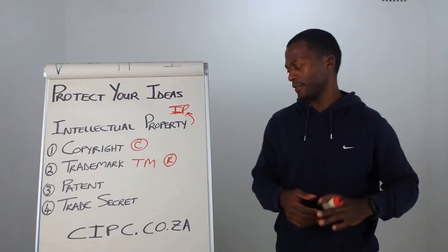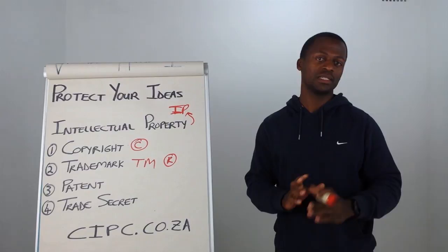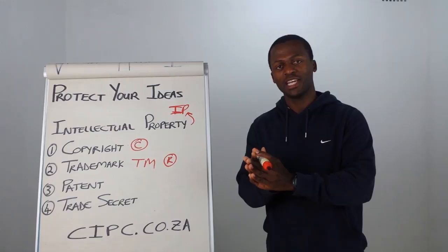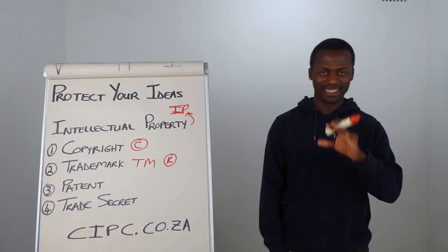Number four is trade secrets. Trade secrets is all about what it says — secrets. For instance, the KFC recipe is a trade secret. It's not necessarily registered anywhere; they just keep it a secret inside the KFC headquarters. Same thing goes for the Coke recipe — it's also a trade secret. A few people know the exact formula for Coca-Cola, and they keep it somewhere in the US.